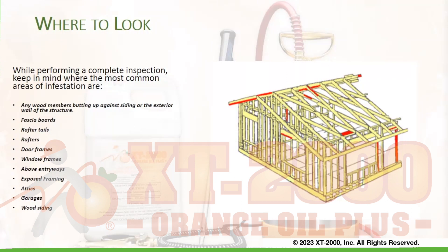Where to look: While performing a complete inspection, keep in mind where the most common areas of infestation are. Any wood members butting up against siding or the exterior wall of a structure, facial boards, rafter tails, rafters, door frames, window frames, above entryways, exposed framing, attics, garages, and wood siding.